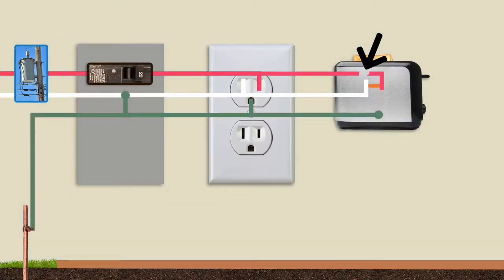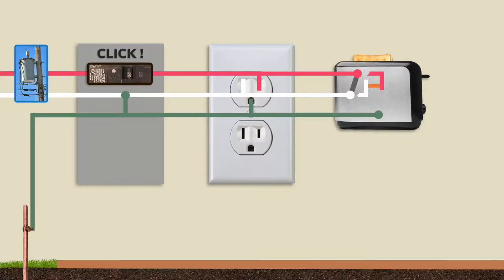If a wire breaks inside an appliance, the power lines can come in contact with the metal case. If both the hot and neutral lines break and come in contact with the metal, it creates a short circuit and the breaker will trip.